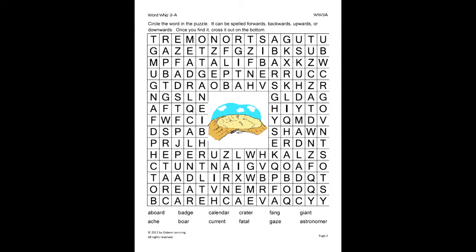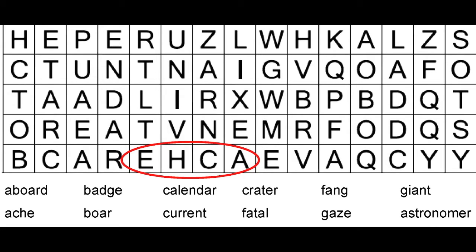On this activity, the student will circle the word in the puzzle. It can be spelled forwards, backwards, upwards, or downwards. Once you find it, cross it out on the bottom. For example, we found the word ache. So we circle the word and cross it out in the word bank.